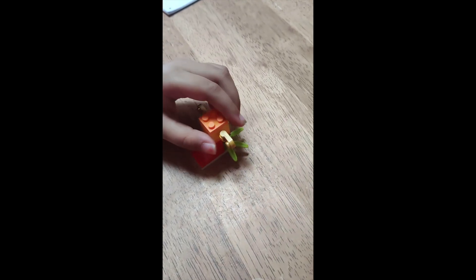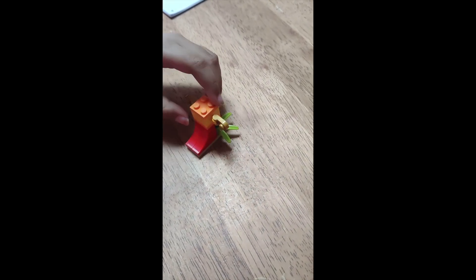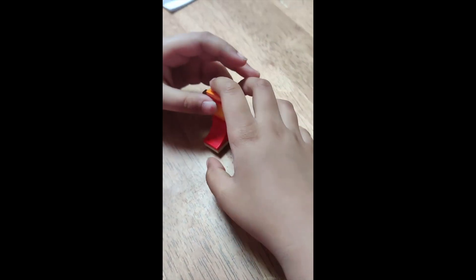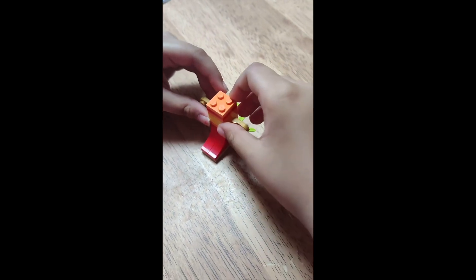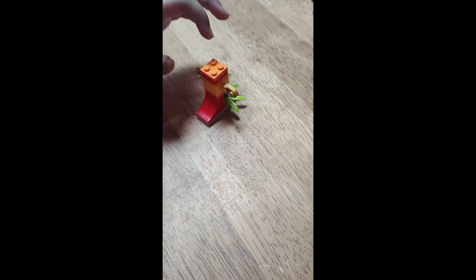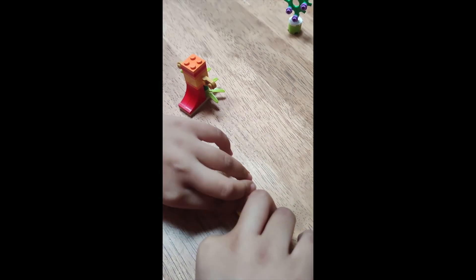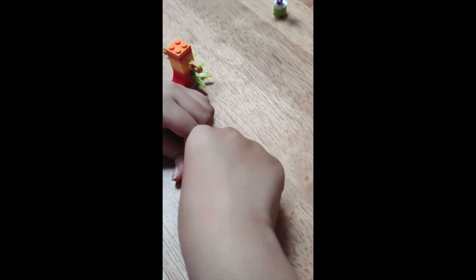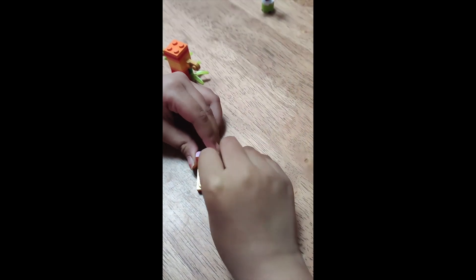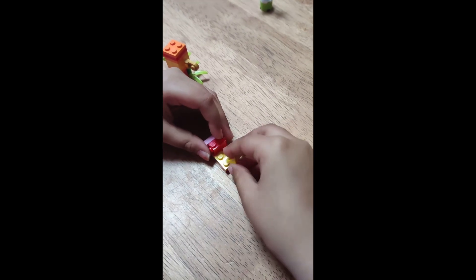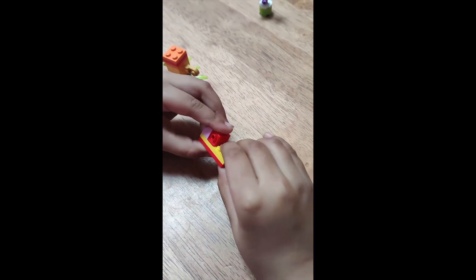Now we take one red one, then we put an orange on top of it. Now we take this red and this yellow, put the yellow on top of the red. Now we put this pink thing on, then these two red things for the eyes. Now we put this yellow thing on.